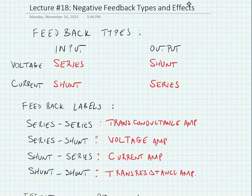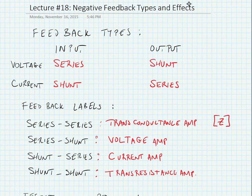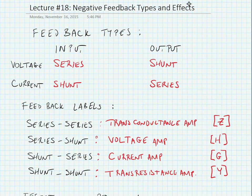We're going to use two-port networks to calculate the parameters for these four different types of amplifiers. For a transconductance amplifier, we're inputting a voltage and outputting a current, which means the feedback network needs to input a current and output a voltage — so we use Z parameters. For voltage and current amplifiers, we use hybrid parameters: H parameters and G parameters. For a transresistance amplifier, we're inputting a current and outputting a voltage, so the feedback network inputs a voltage and outputs a current, meaning we use Y parameters.